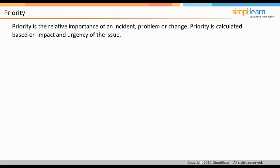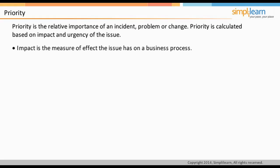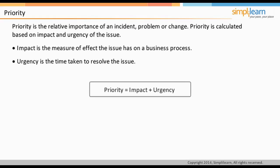Priority, in simple words, means the relative importance of an incident, problem, or change. It is used to identify required times for actions to be taken — for example, the SLA or Service Level Agreement may state that priority-one incidents must be resolved within 12 hours. Priority is calculated based on the impact and urgency of the issue. Impact is the measure of the effect the issue has on the business processes of IT service support, and urgency is how soon the issue needs to be handled. Priority equals impact plus urgency.